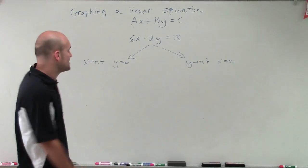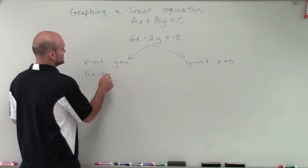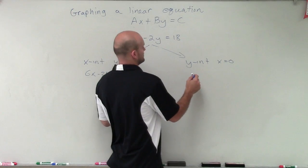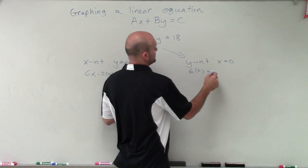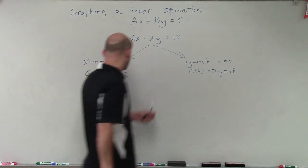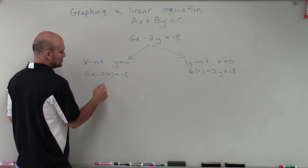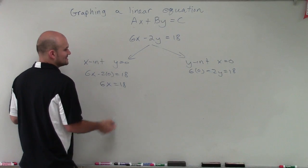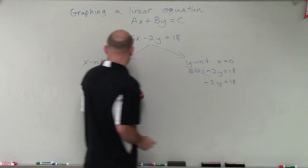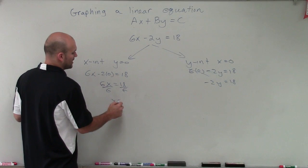So x-intercept is when y equals 0. So I do 6x minus 2 times 0 equals 18. And over here, I have 6 times 0 minus 2y equals 18. So now negative 2 times 0 just goes 0. So I'm left with 6x equals 18. And over here, that goes to 0. So I'm left with negative 2y equals 18. Now to solve for x, I divide by 6 on both sides. So therefore, x equals 3.